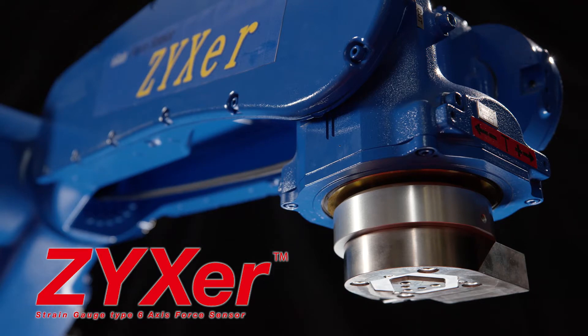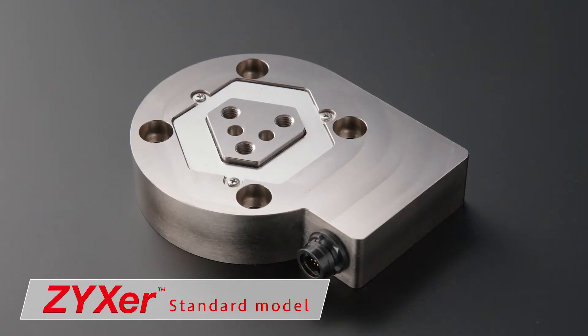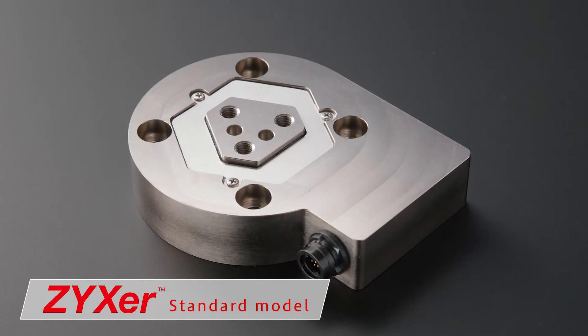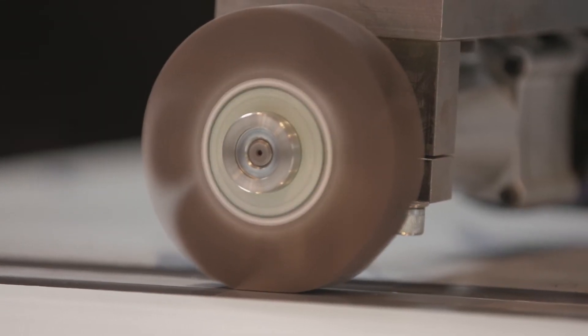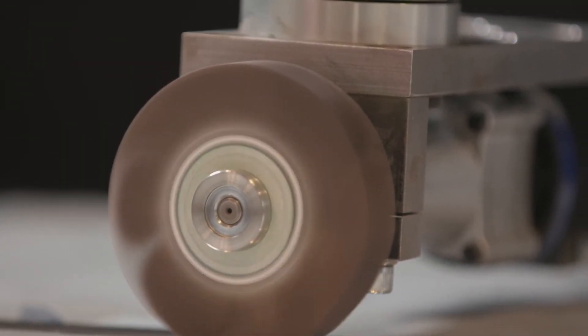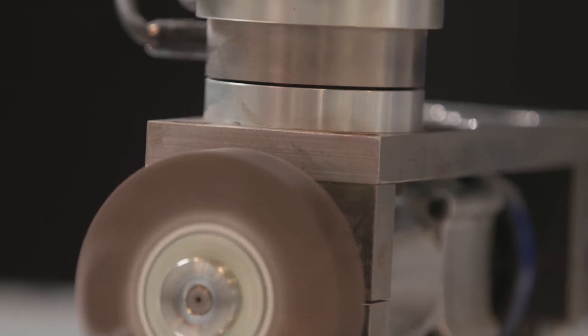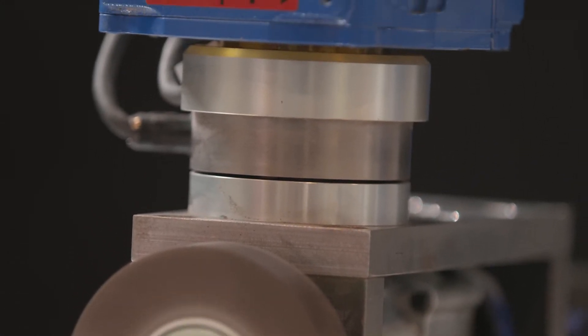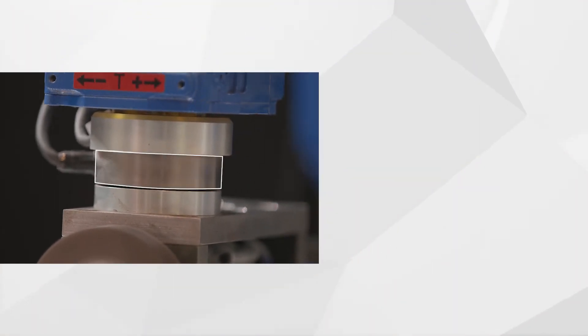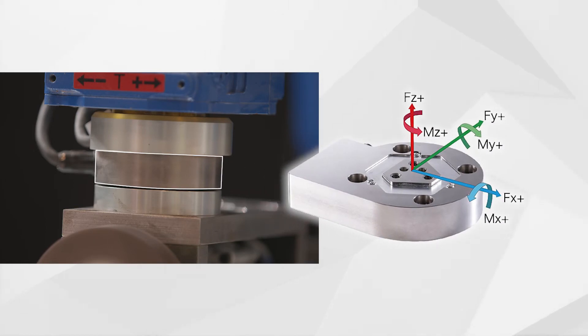Zixxer, the 6-axis force sensor, can dramatically improve the operation performance of industrial robots. The Zixxer is a sensor that can simultaneously measure force in the X, Y, and Z axes, as well as the moment of force in those axes.